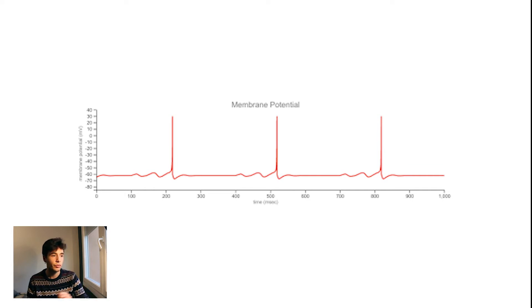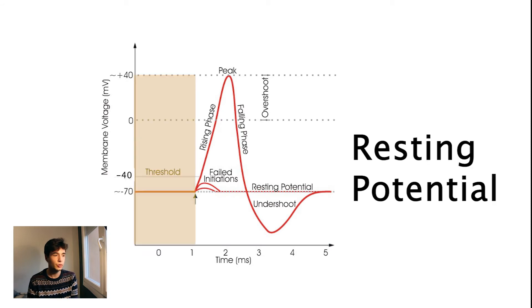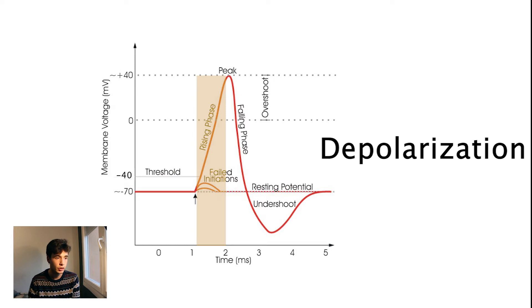A neuron goes through four stages. The first one being the resting potential, when the neuron is not excited and its voltage remains more or less constant at minus 70 millivolts. The depolarization, when the neuron is excited and the voltage starts increasing until it reaches a threshold of minus 40 millivolts, after that it spikes.